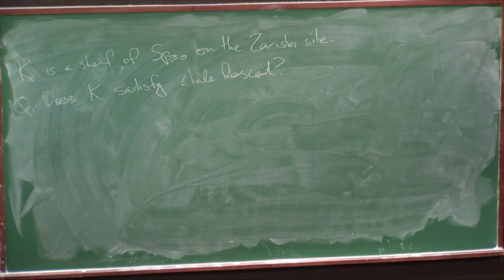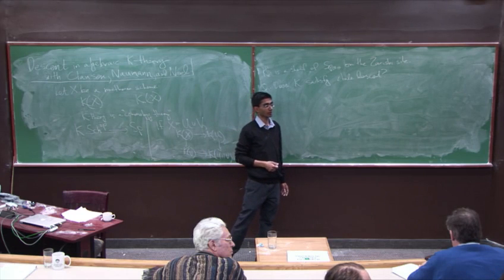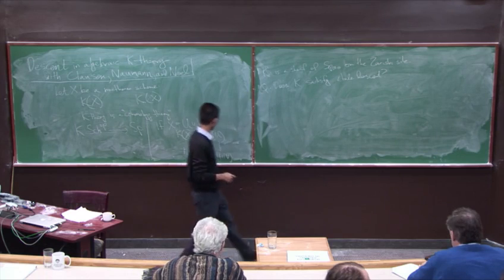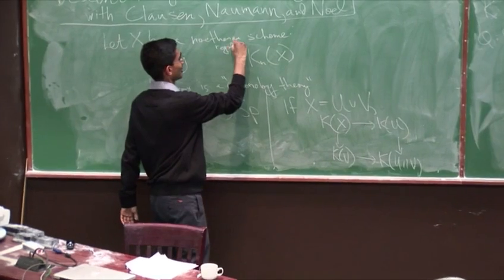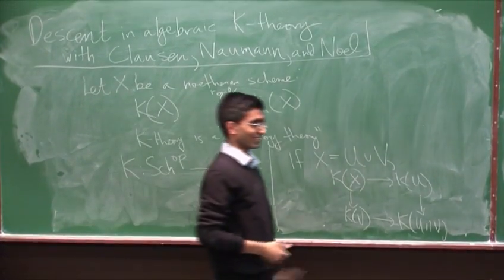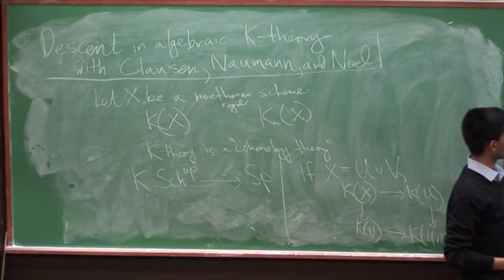But it doesn't have Zariski descent. Well, I said connective spectrum. Yeah. It does. Is there a mistake if I work with connective spectrum? I think this is fine. I don't know what it is. Is there an issue with pi zero? I think there's a pi zero. OK. Let's assume then X is regular, so we don't have to worry about that. Or let's, yeah. Thank you.